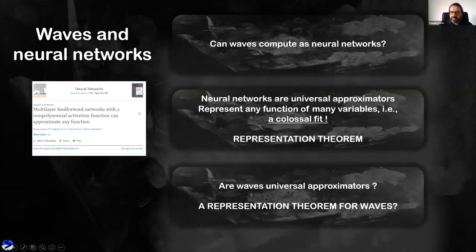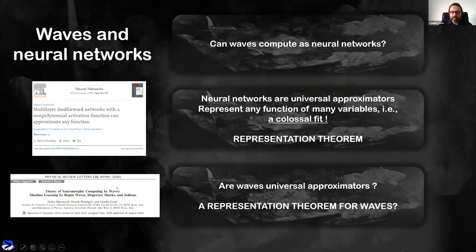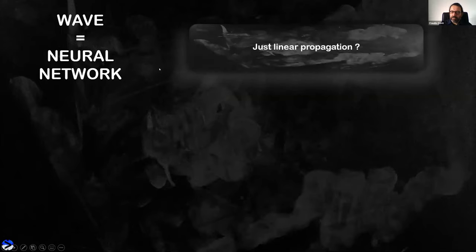If we are trying to establish an equivalence between waves and neural networks, we can ask whether waves are also universal approximators — can wave propagation do the same kind of fitting as a neural network? In other words, is there a representation theorem for waves? We reported this in a recent paper, clearly showing the conditions under which a wave is as powerful as a neural network to perform a fit. However, in general a wave is not a universal approximator — only under certain conditions.